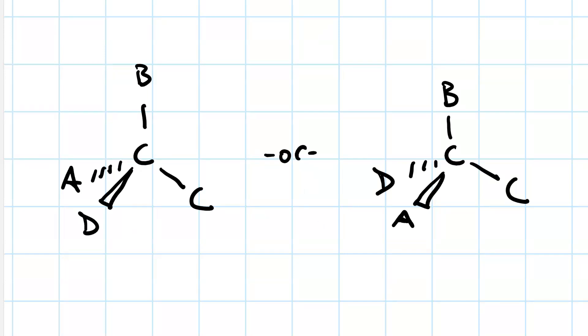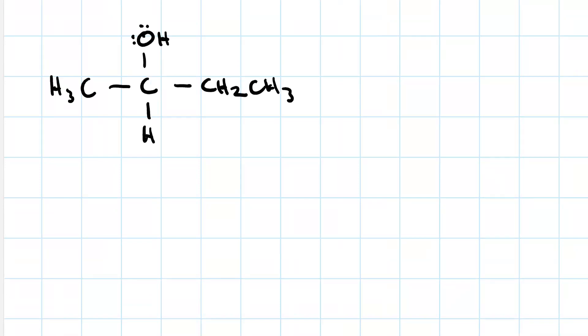So we really do need to specify using these 3D bonds—it makes a big difference. Going back to our 2-butanol, one way we could draw it is like this: with the methyl group on the dash and then the H on the wedge, have the hydroxyl in the apical position, and then the ethyl group going down into the right.